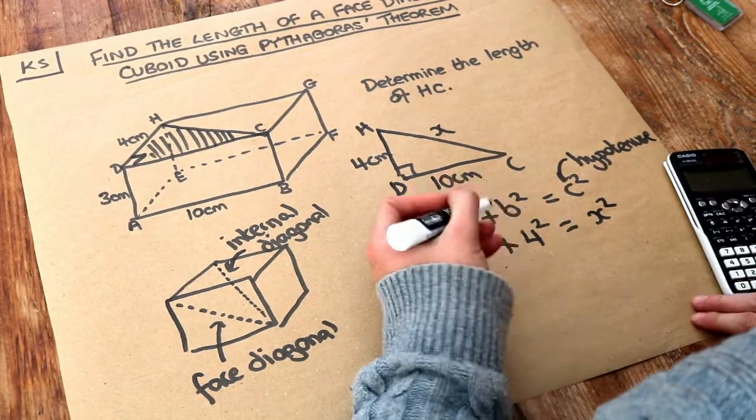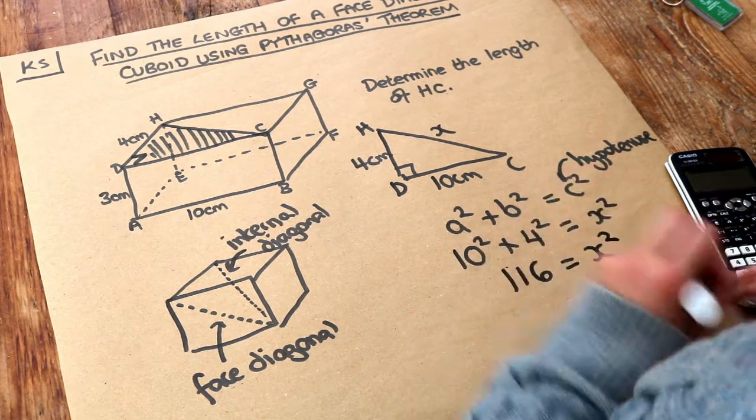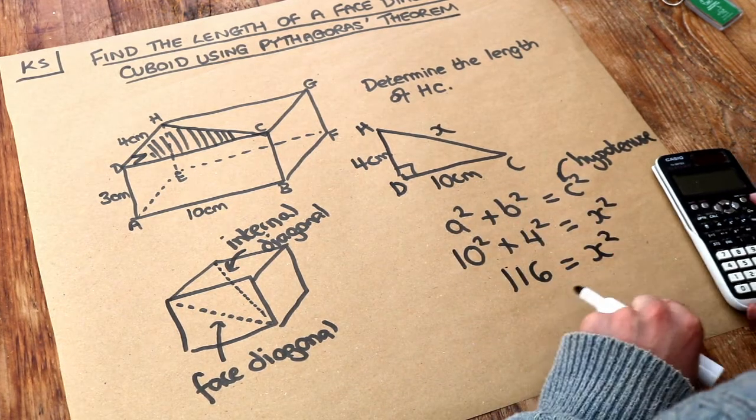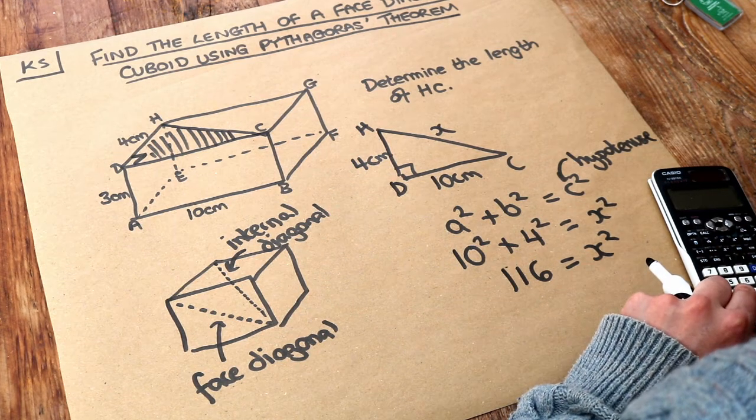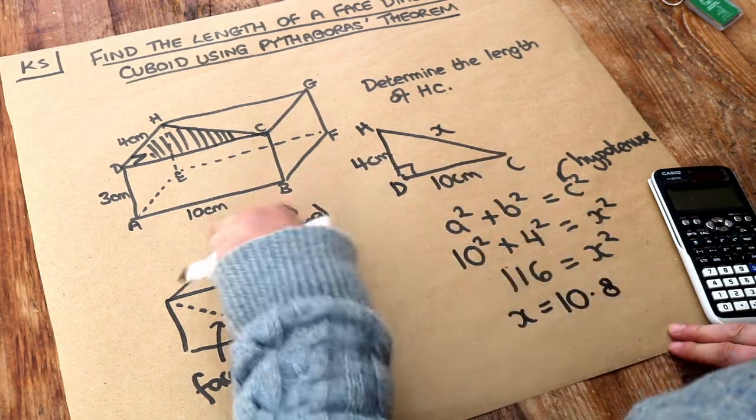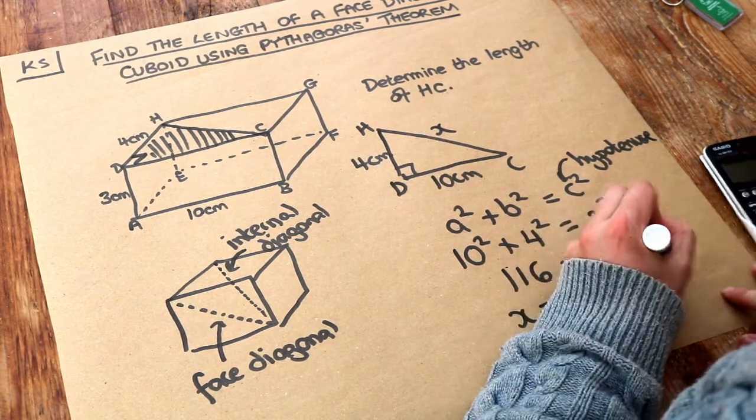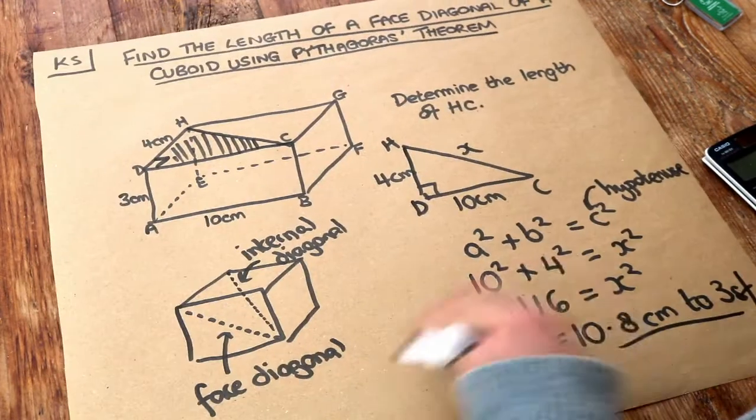If we just put 10 squared plus 4 squared on our calculator, you would get 116. And then to get rid of that squared, we just square root both sides, so square root 116, and press the SD key. That gives us 10.8, the unit centimeters, and that was to 3 significant figures. So that is the final answer.